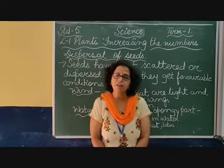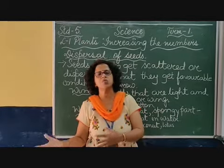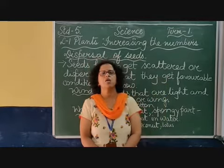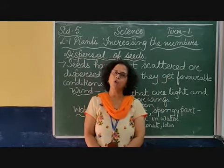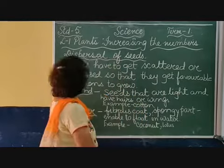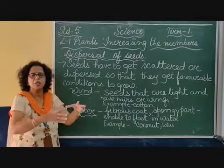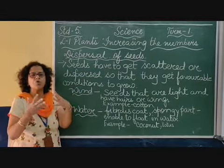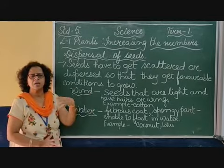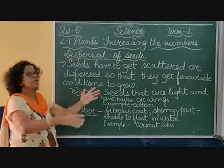So there are various agents — things that help the seeds to move from one place to another — and that helps them to grow. This is called dispersal of seeds. Dispersal means to get scattered; just like at the end of the school day you disperse and go to your vehicles and go home. So dispersal of seeds means going from one place to another.